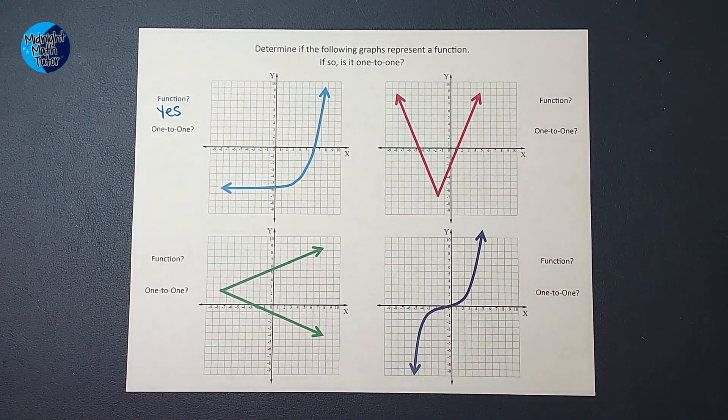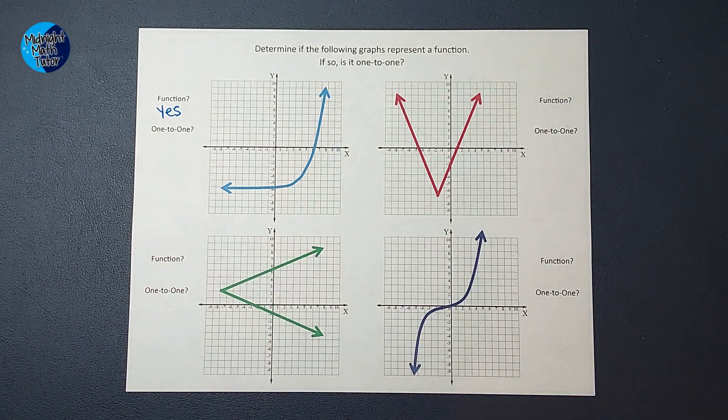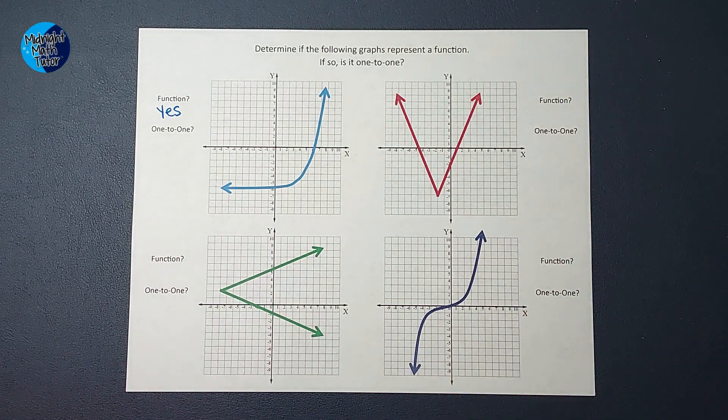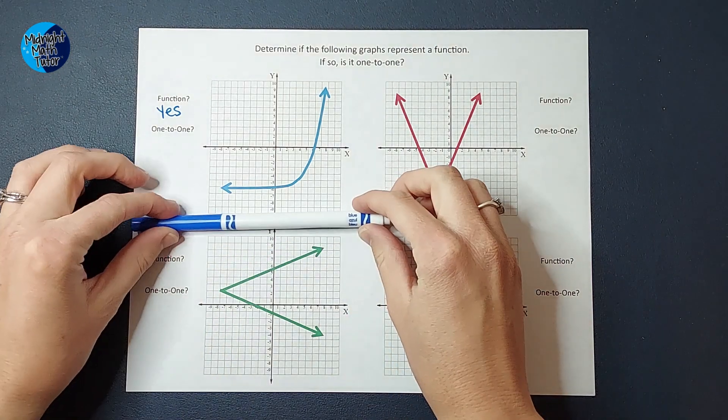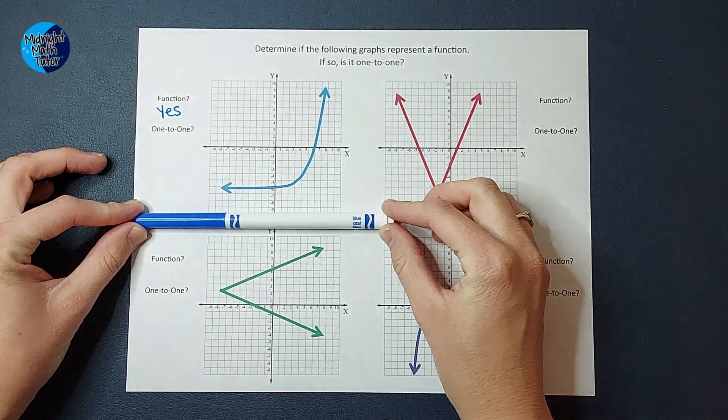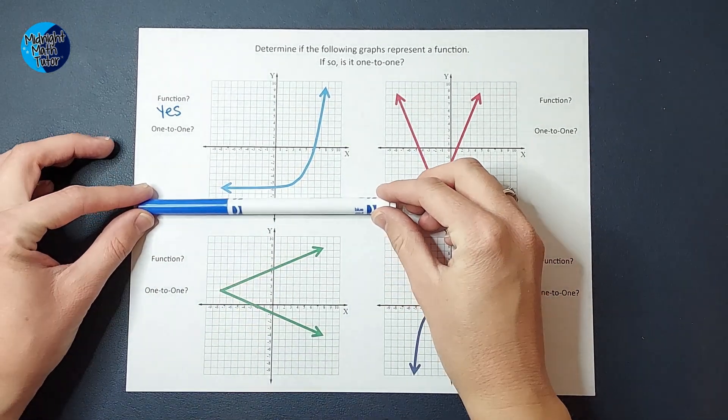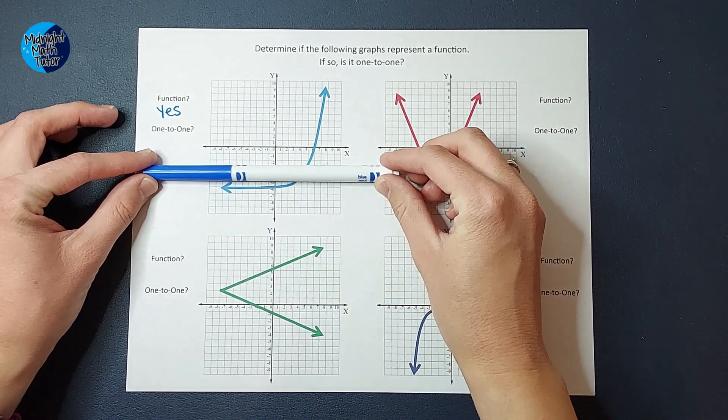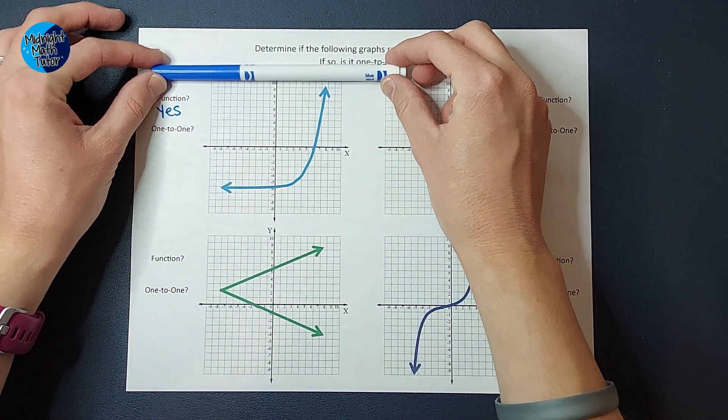Now if it is a function, is it one-to-one? For a function to be considered a one-to-one function, it needs to pass not only the vertical line test, but also the horizontal line test, which you can probably guess. We're going to do the same thing, but have my marker horizontal. So I'm going to go this way and make sure it never touches two points at the same time, and it doesn't.